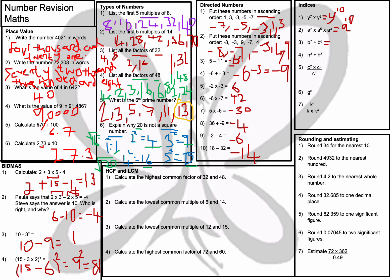Question number 3: b⁷ ÷ b⁶. When dividing with the same base, I subtract the powers. 7 take away 6 is 1, so the answer is b¹ or just b. Question number 4: h³ ÷ h⁸. It's h to the power of 3 minus 8, which is h⁻⁵, or I can write it as 1/h⁵. Either is correct.